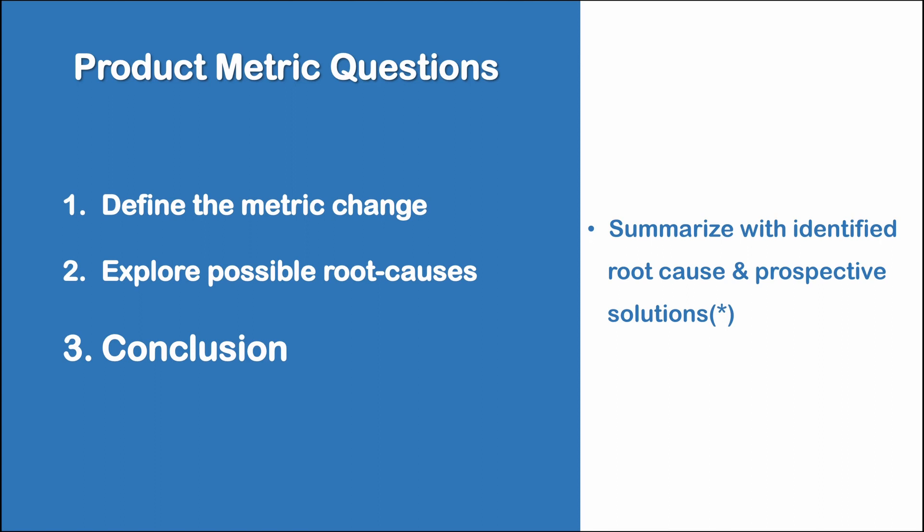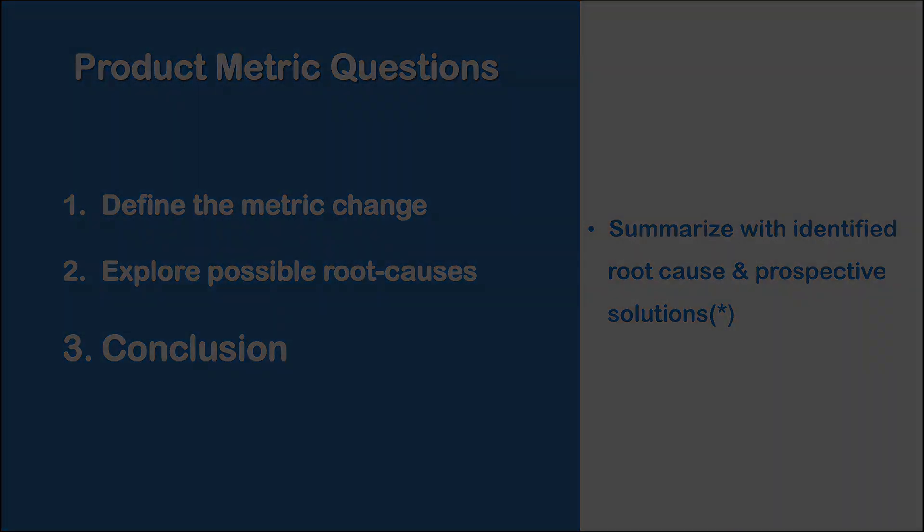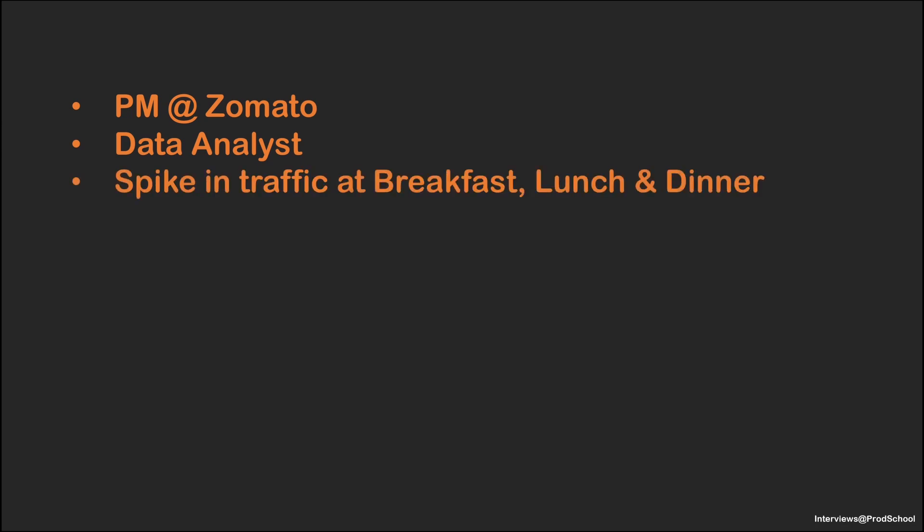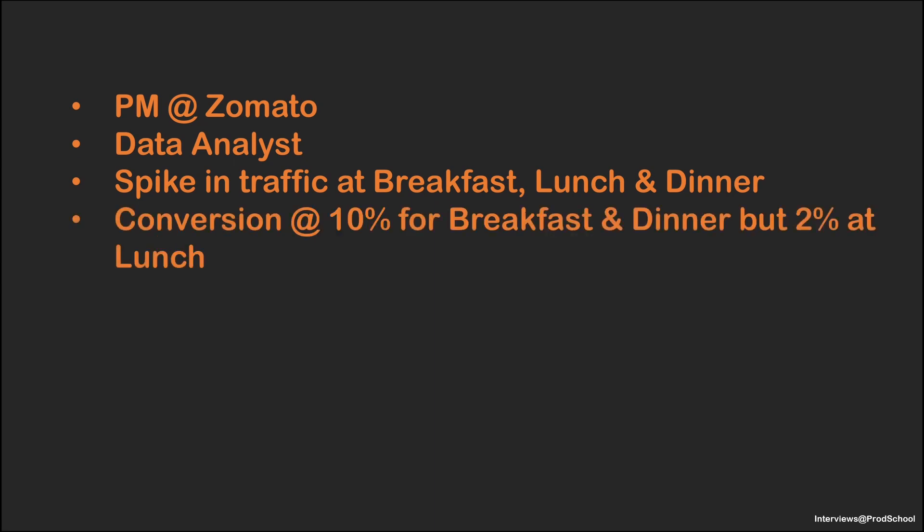Now that you know how to approach a metric change question, let's apply this approach to a mock interview setting. The question is: you are a PM at Zomato. Your data analyst comes up to you and tells you that there is a spike at breakfast, dinner, and lunch time. However, at lunch, the conversion is 2% compared to dinner and breakfast where the conversion is as high as 10%. How would you go about solving this problem?